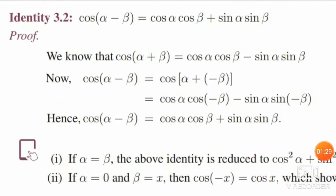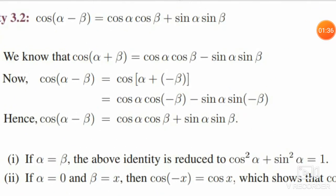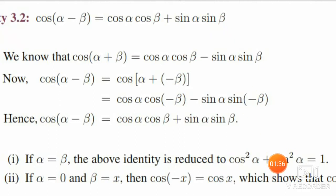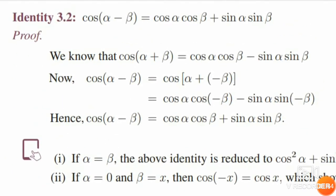In the first subdivision, substitute alpha equal to beta. Then sin alpha into sin alpha is sin squared alpha, and cos alpha into cos alpha is cos squared alpha. So both left hand side and right hand side are equal because we know that cos squared theta plus sin squared theta is equal to 1. The same 1 you get as a result.